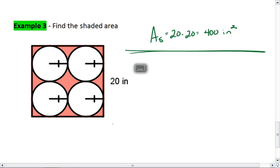If this entire length is 20, it means that the diameter of each of these is 10, and so the radius is 5. The area of one circle is going to be pi r squared, which is pi times 5 squared.